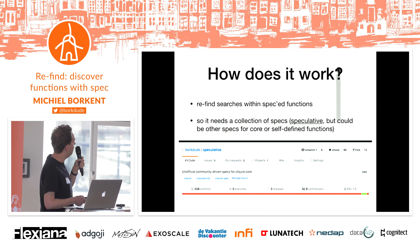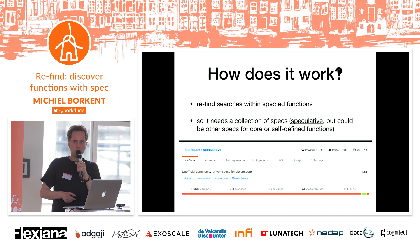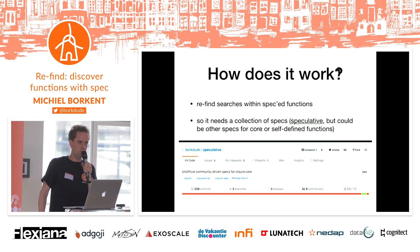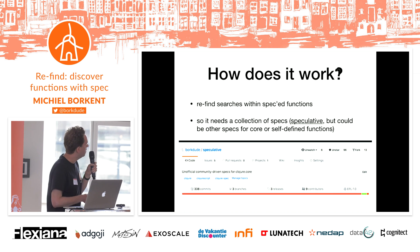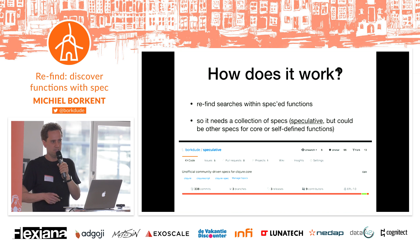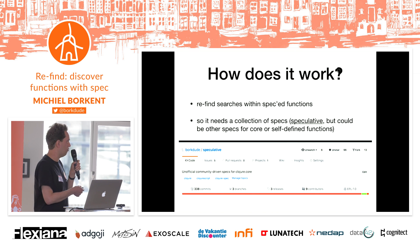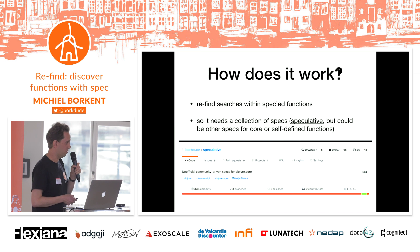So how does this work? ReFind searches within functions that have a spec. But where do these specs come from for these Clojure core functions? There is a library called speculative that has more than 100 specs for Clojure core functions. It's hosted on GitHub and it already has nine contributors. This is most useful for the specs for Clojure sets, because you can get into some nasty corner cases when using Clojure set functions when you are not providing sets. So if you instrument set functions with these specs, you will maybe discover that you were using them incorrectly.